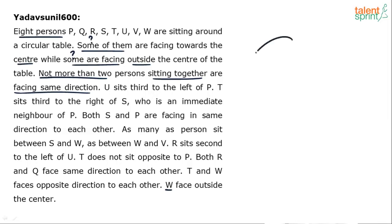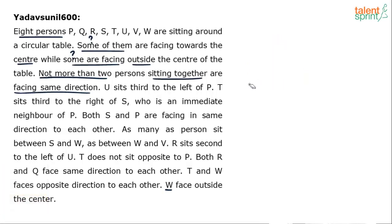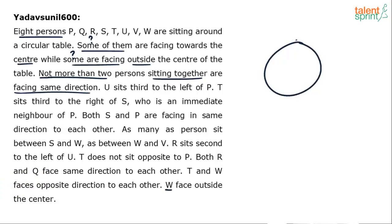We'll take up two circles with eight positions each. Remember: when a person faces center, left is clockwise and right is anti-clockwise. When facing outwards, these interchange — left becomes anti-clockwise and right becomes clockwise. From the last statement, W faces outside the center, so W is facing outwards.